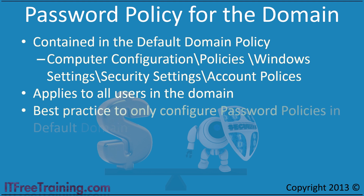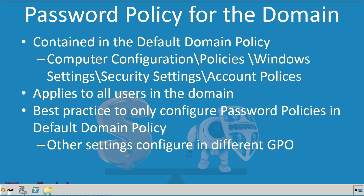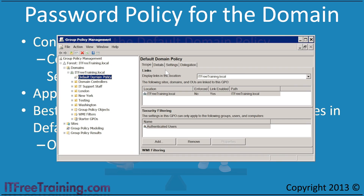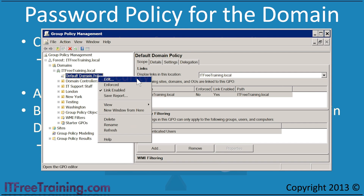For this reason, it is considered best practice to only configure password settings in the default domain policy. Settings like desktop settings and software deployment should be in a separate group policy. Essentially, any settings other than password policy settings should be configured in a separate GPO. To configure these settings, open Group Policy Management from Administrative Tools under the Start Menu. At the top is Default Domain Policy. This is created when the domain is created and is the only place you should consider configuring the default password settings for your domain.